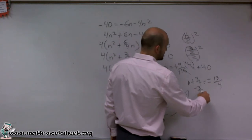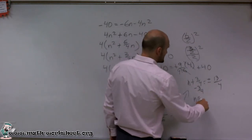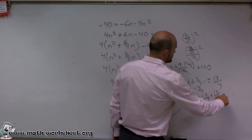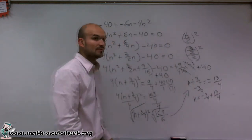So now I subtract 3 fourths. So my final answer is n equals negative 3 fourths plus or minus 13 over 4.